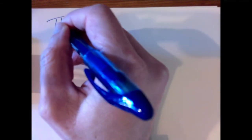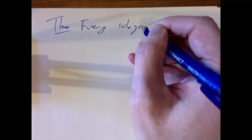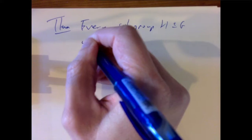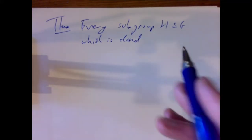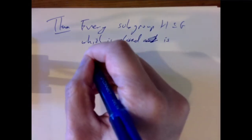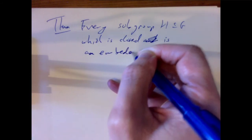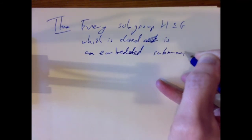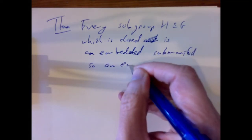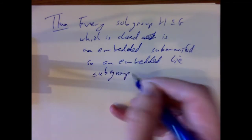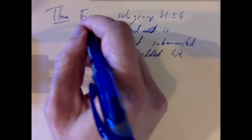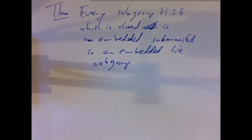There is a convenient theorem which we will eventually prove: every subgroup H contained in a Lie group G, which is closed as a subset, is an embedded submanifold and hence an embedded Lie subgroup. This makes it easy to write down lots of examples. The following examples can be verified using this theorem, but you could also check them more directly using the implicit function theorem.